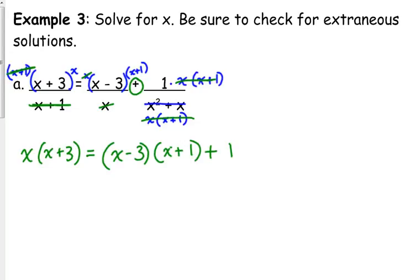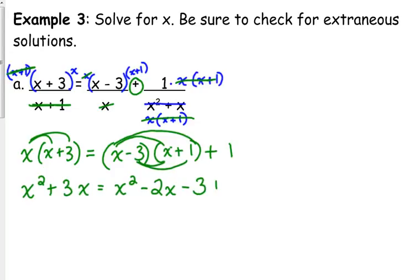So denominator's eliminated, now we've just got to try and solve this equation. Distribute, x squared plus 3x. We need to FOIL, x squared plus x minus 3x is minus 2x, and then negative 3 times negative 1 is negative 3. Now, this is what makes this one a little bit different. We haven't had this before. We've got a quadratic equation, we have x squared.